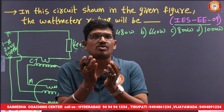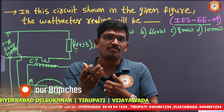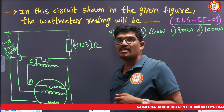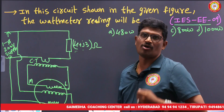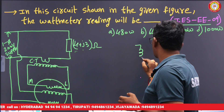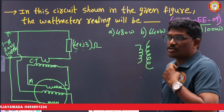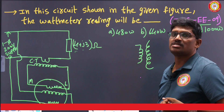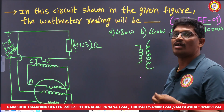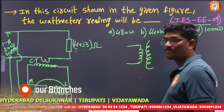What is the purpose of a current transformer? Basically, the current transformer is used to measure high currents, to protect equipment, and also to protect major equipment. The current transformer is also called a step-up transformer. In a transformer, power should be constant.